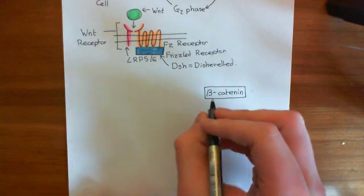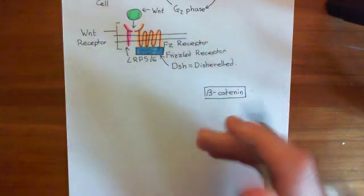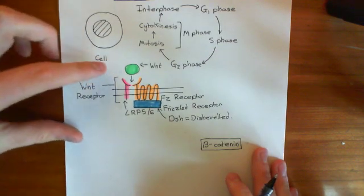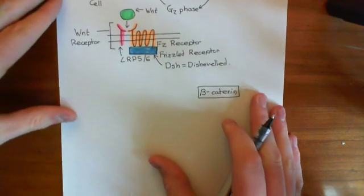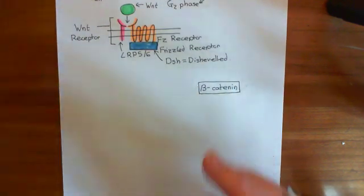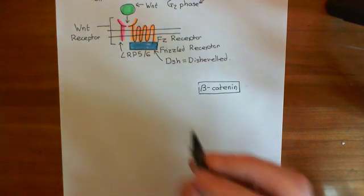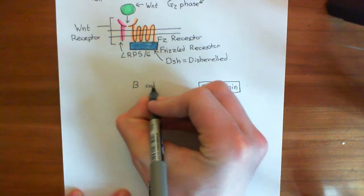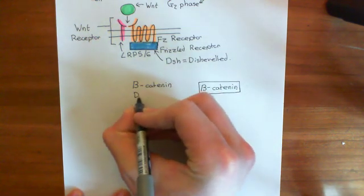Usually, if we don't want our cell to be dividing, beta-catenin needs to be at a low level. If this cell was not dividing prior to being stimulated by Wnt, then beta-catenin needs to have been at a low level. How is beta-catenin kept at a low level? There is a complex known as the beta-catenin destruction complex.